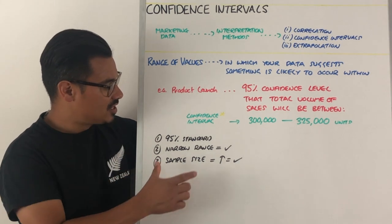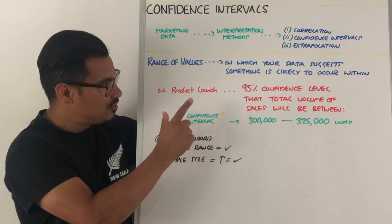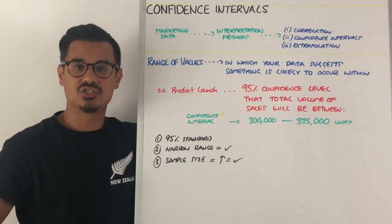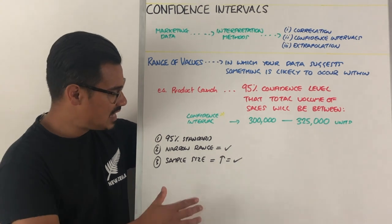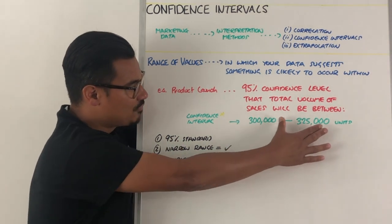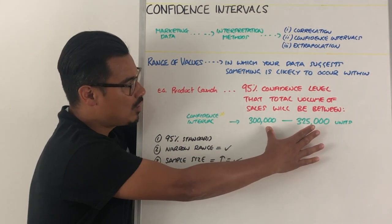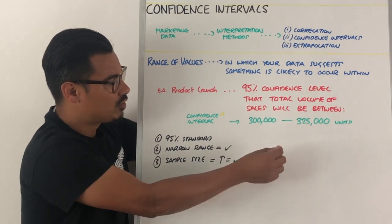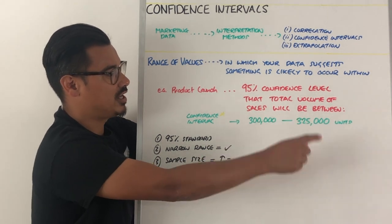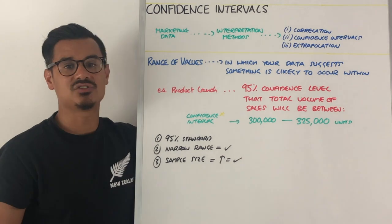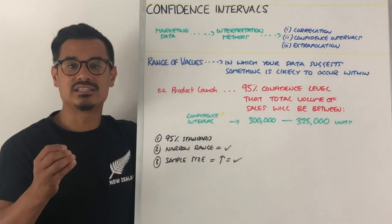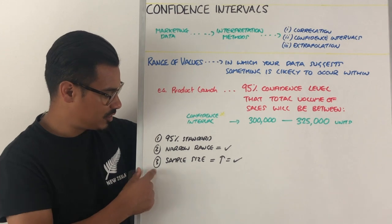A key thing to know is that a confidence level of 95% is seen as standard to make business decisions on — 95% is your seal of approval. Also, the narrower the range, the better. For example, if it was 310,000 to 315,000 units instead, that's better because you can make more effective decisions the tighter the range.